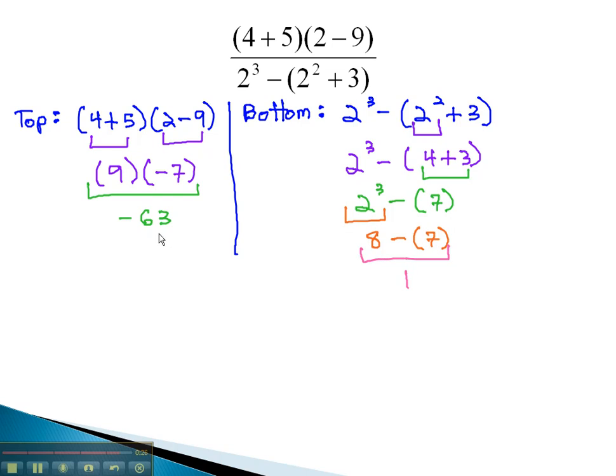We have now simplified the numerator and the denominator. Once the top and bottom have been simplified, we're ready to divide. We have negative 63 over 1. When we divide, that's simply negative 63. And that completes our problem.